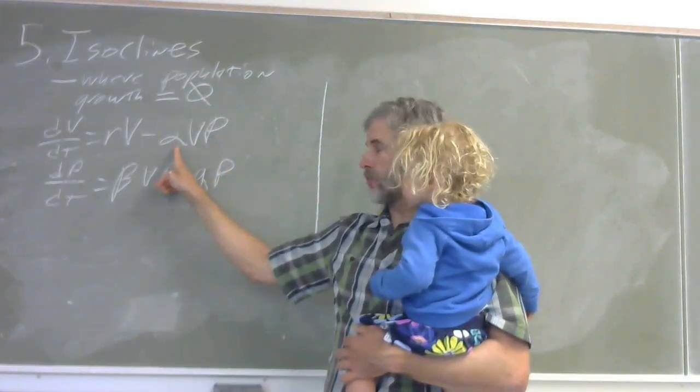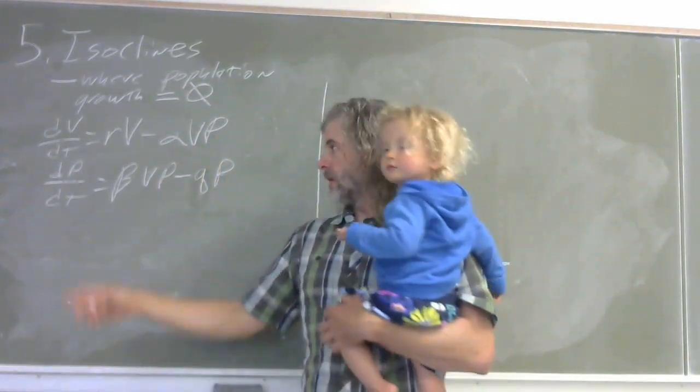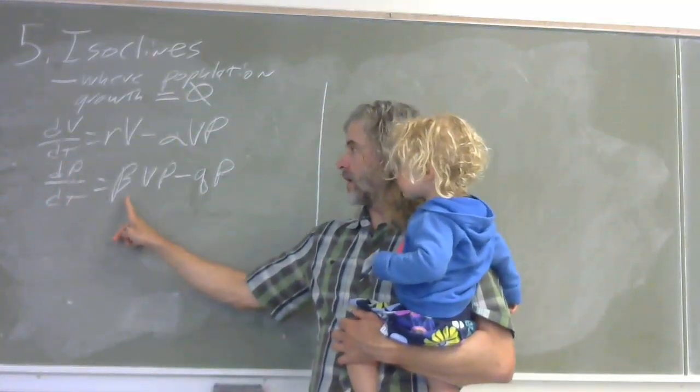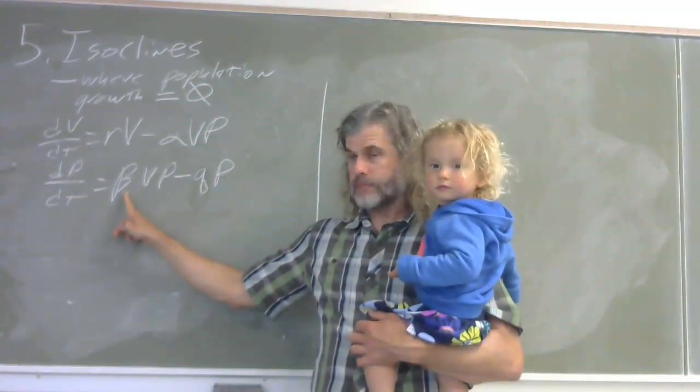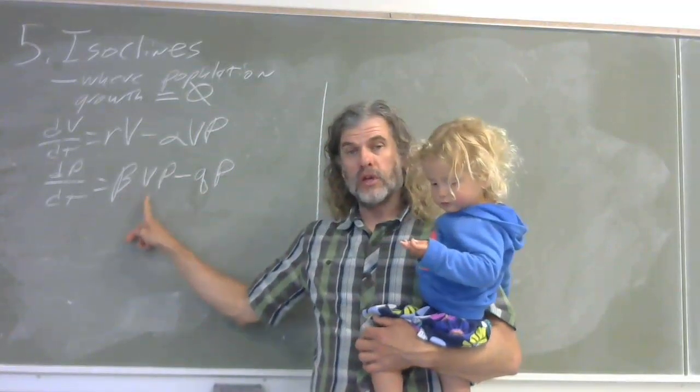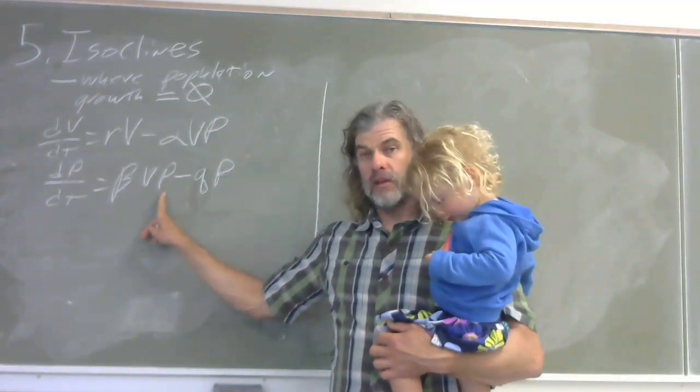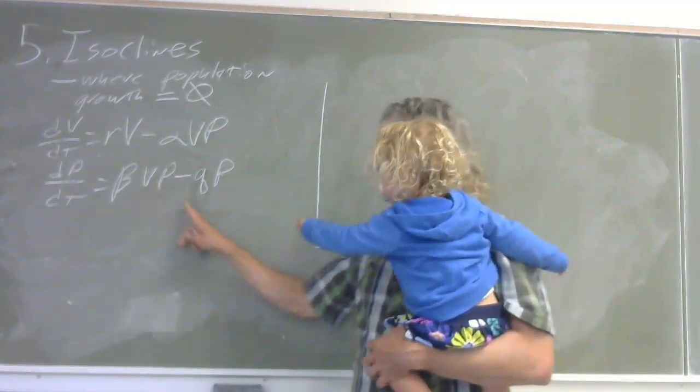Predators are P, and this parameter here is the efficiency rate. The predator dynamics are linked, and they're born at some rate. That's proportionate to the number of reproductive individuals and the number of prey.